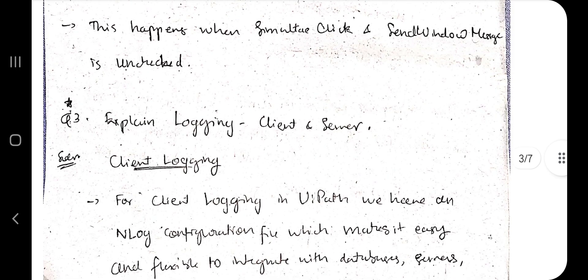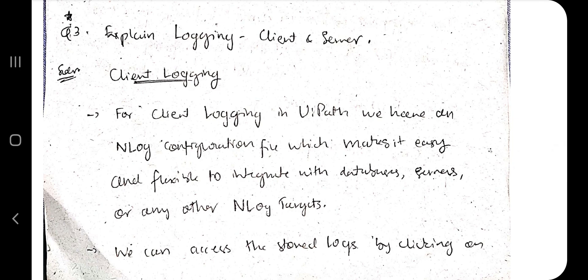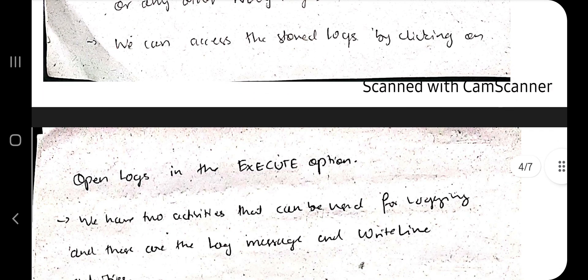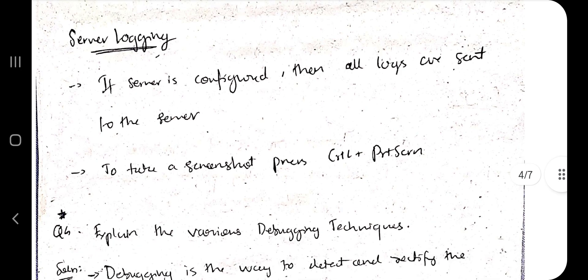Moving on, we have the next question which is explain logging client and server. Client logging can be done in two ways: the logging file should be stored in the system, second is by using the log tab where we have log message activity. From the server, if we have connected to the server, the logging will be sent to the server. Another question can be asked: how to take a screenshot in the server logging? To take screenshot it will be using Control plus Print Screen.